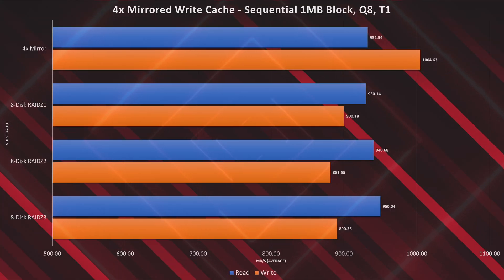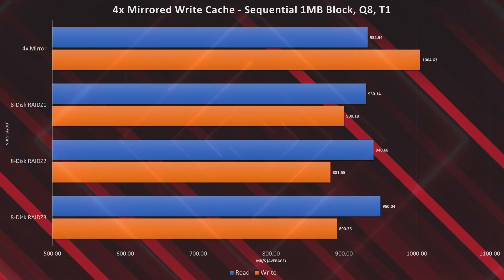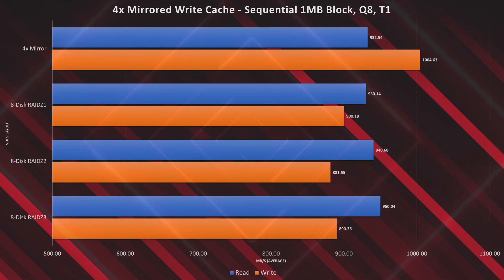From this baseline, we should be able to see what impact having read and write caches has on performance. In these tests, we've added a 4x mirror write cache to each Data VDev layout — because we have the disks and that should provide the best possible performance for a write cache. These results are kind of shocking. I expected to see a massive boost in write speeds for all Data VDev layouts because we added a write cache. But in reality, having a write cache seems to have hurt every layout's write performance by around 30 to 60 megabytes per second.